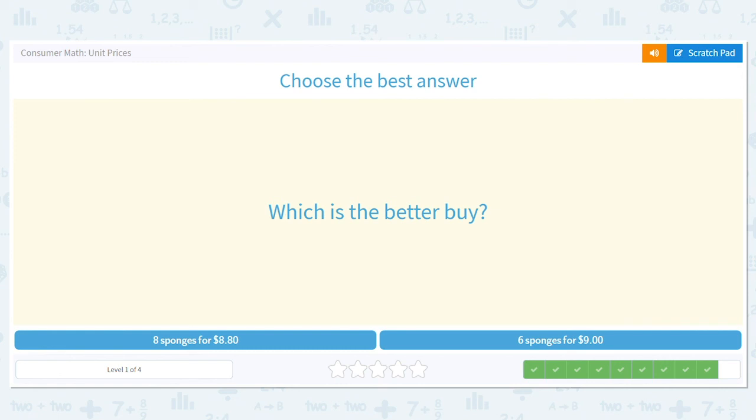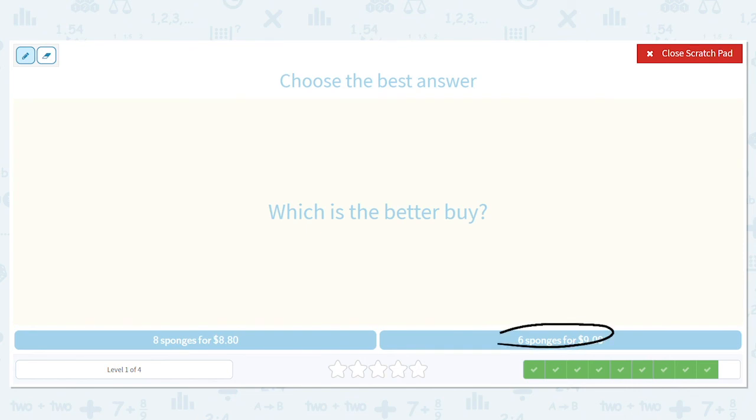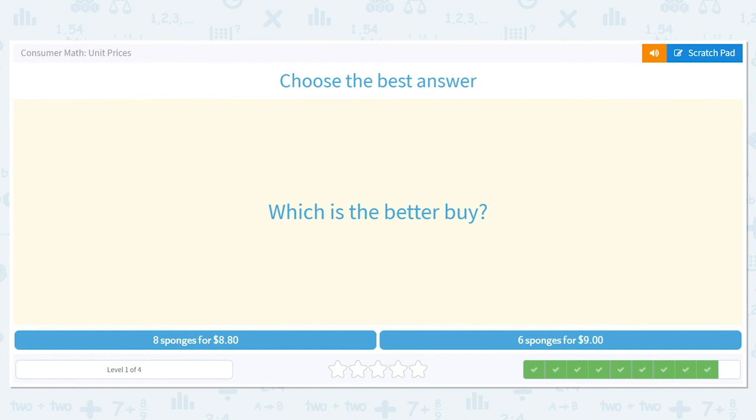And finally, what's the better deal? 8 sponges for $8.80 or 6 sponges for $9? I think you can feel this one out. This is a more sponge, less money problem, right? So 8 sponges for less money, or I can get 6 sponges for more money? That sounds terrible. That sounds like a very bad deal. It's clearly 8 sponges for $8.80. Just check: 8 is bigger than 6, $8.80 is less than $9.